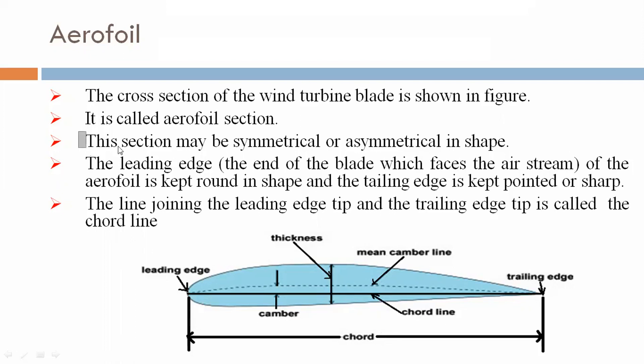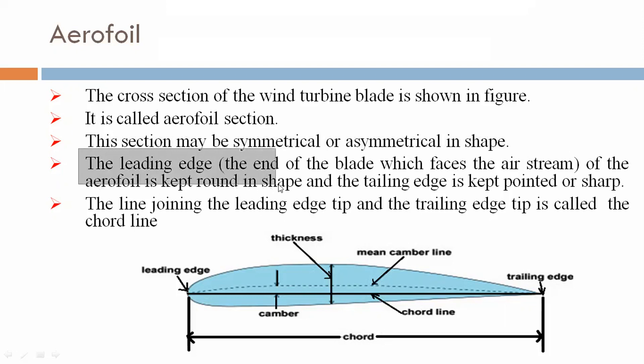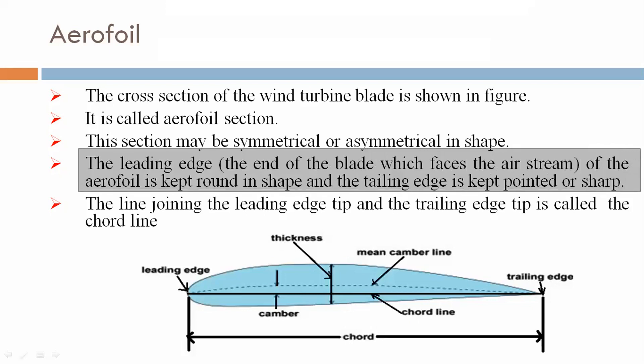The airfoil section may be symmetrical or asymmetrical in shape. The leading edge — the end of the blade which faces the air stream — is kept round. The trailing edge is kept pointed or sharp.